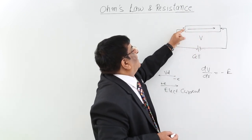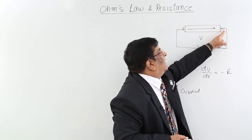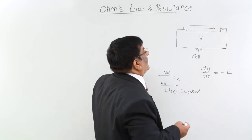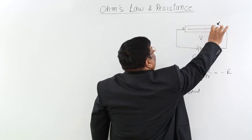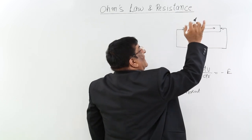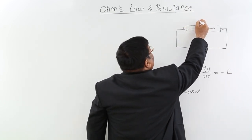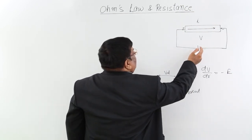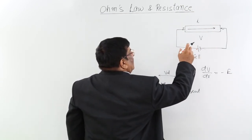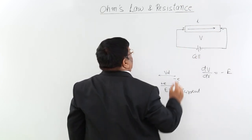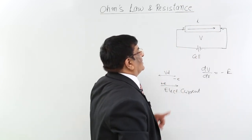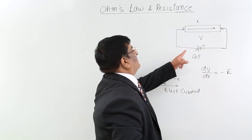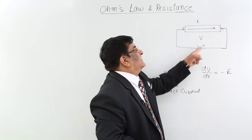Positive charges are always repelled by the plus terminal and attracted by the minus terminal. So this is the direction of motion of positive charges. Now the potential difference applied is V, and by all calculations — by seeing in the meter — we find that the electric current here is I. We have a certain arrangement where we can add more than one cell and change this potential difference.